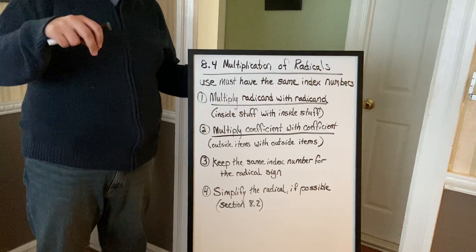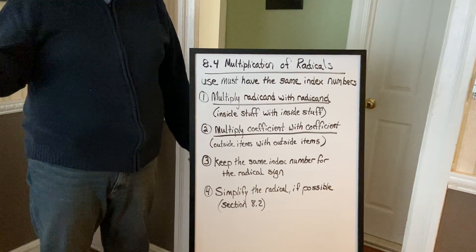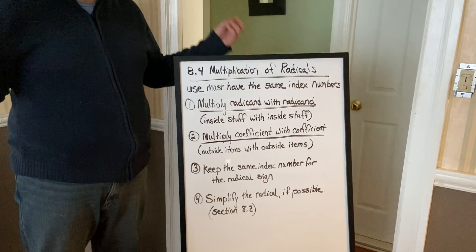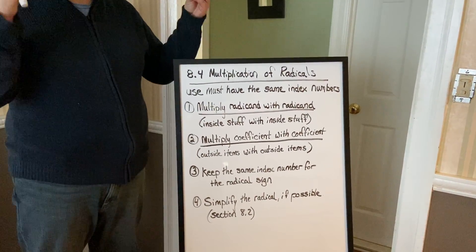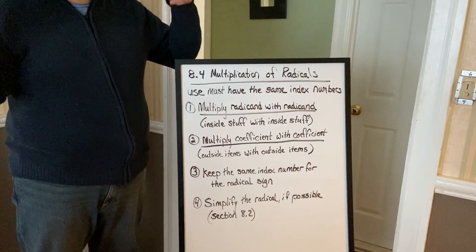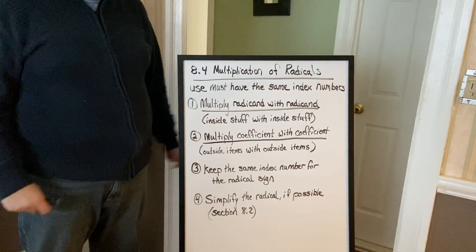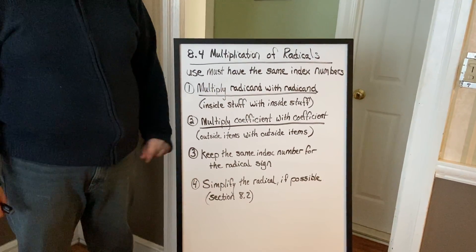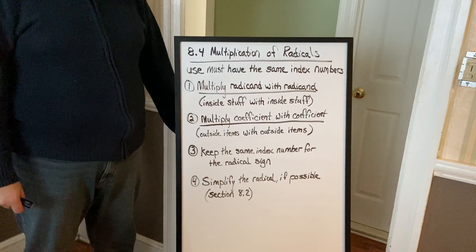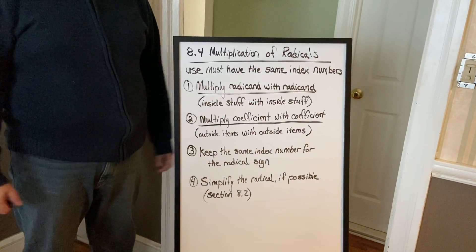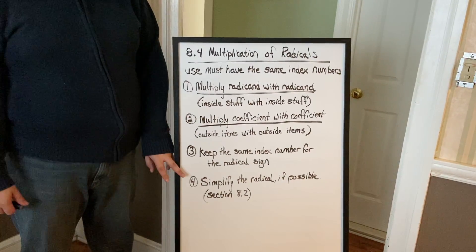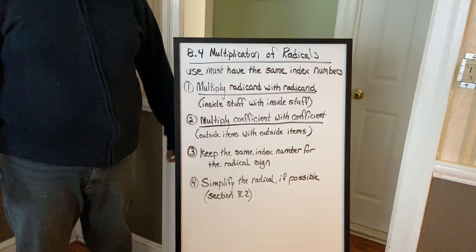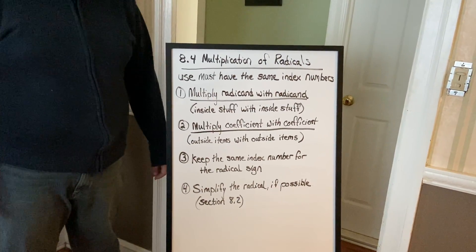Keep that same index number — if it's square root times square root, it stays square root. It doesn't magically become the fourth root. And then just simplify the radicand if possible, using what we learned back in section 8.2.